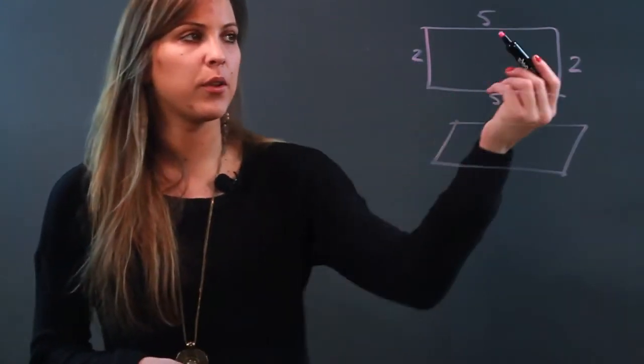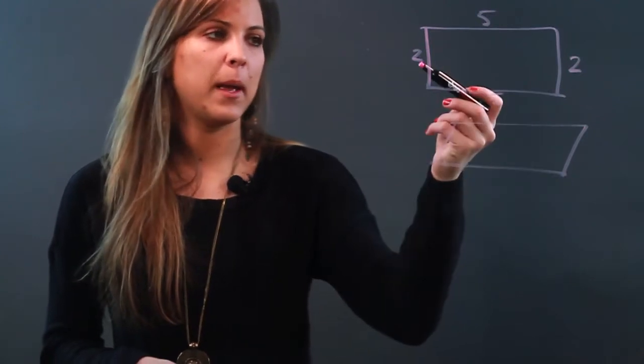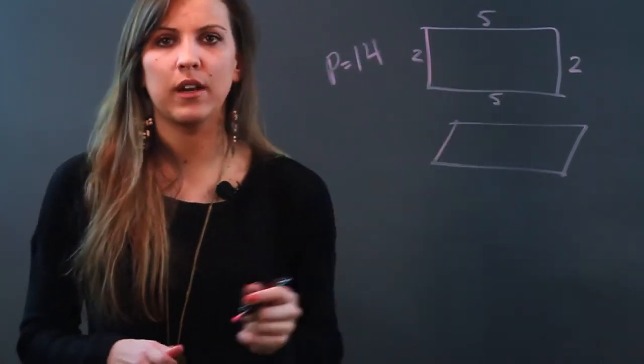So all I would do to find the perimeter is add 5 plus 2 is 7, plus 5 is 12, and plus 2 is 14. So my perimeter here would be 14 units, whatever these units were.